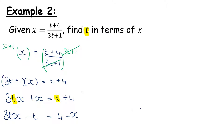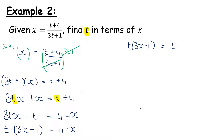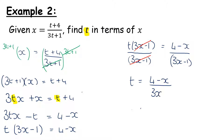Now we have to use a factorization — highest common factor. Looking at 3tx minus t, what's common is t, leaving me with t(3x − 1). Be careful: we've taken t out from minus t and we're left with minus 1 — the double check is t times minus 1 gives minus t — and that equals 4 minus x. I'm going to divide both sides by (3x − 1), which cancels on the left, leaving us with t equals (4 − x) over (3x − 1).